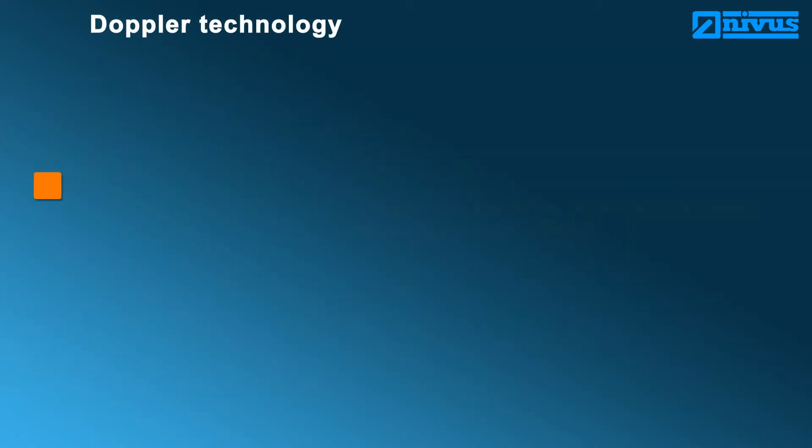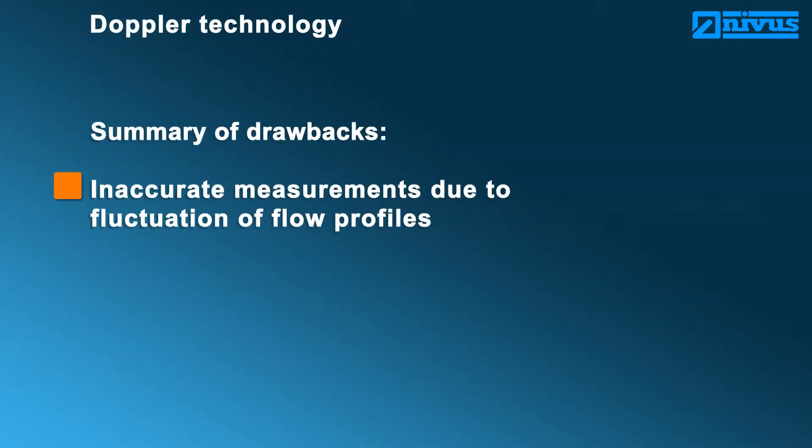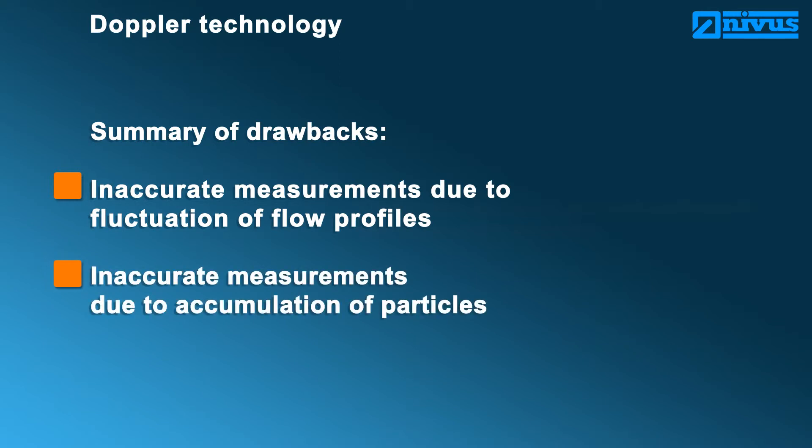The shortcomings of Doppler measurement systems as brief conclusion: faulty results at varying flow profiles, faulty results in case of changing particle concentration, and permanent calibration required.